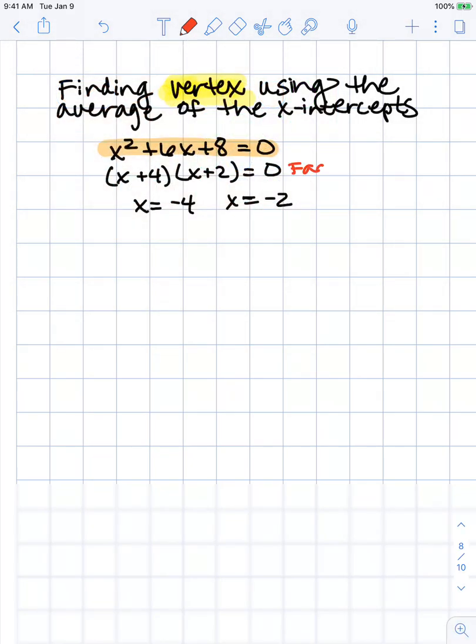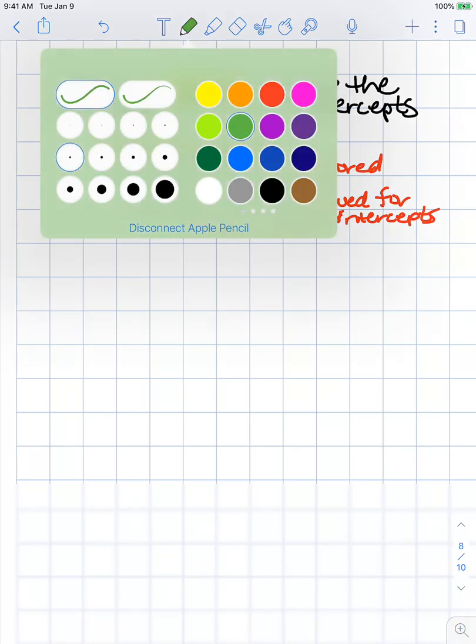Here it's factored as (x+4)(x+2) = 0, and we solved for our x-intercepts, which are x = -4 and x = -2. We're going to take the average of those two numbers, and that will give us the x-coordinate of the vertex.